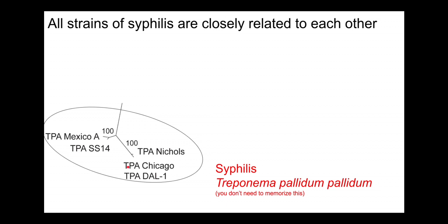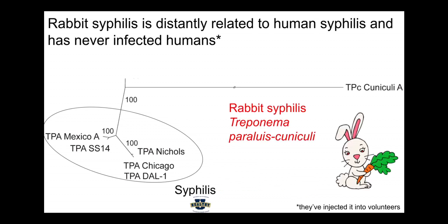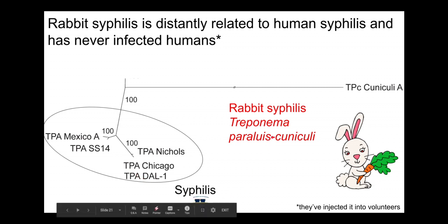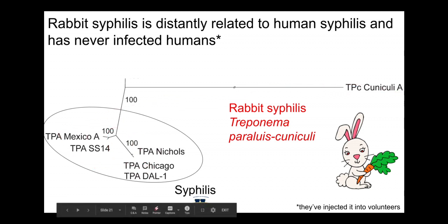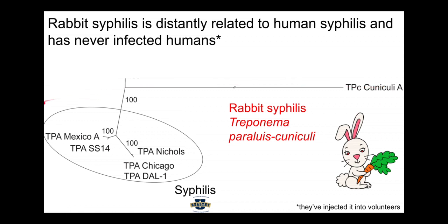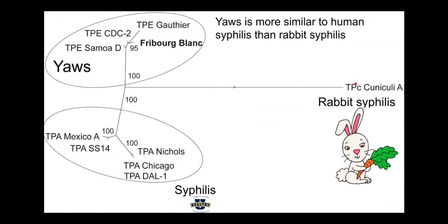All strains of syphilis are closely related to each other, implied by the fact that they are all part of the same subspecies. Rabbit syphilis is much more distantly related — it is actually a separate species, Treponema pallidum cuniculi, so same genus but different species, and we expect that difference. Yaws is more similar to syphilis than it is to rabbit syphilis.